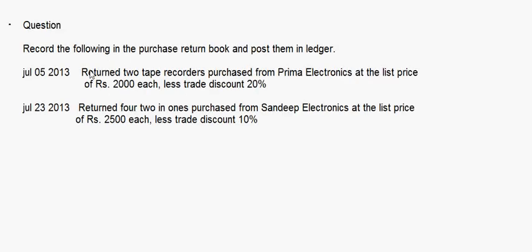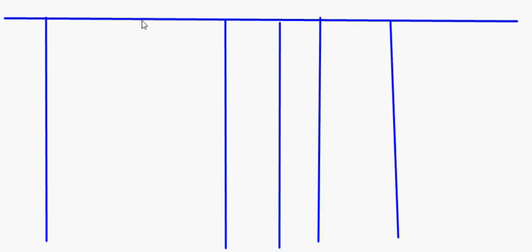Now look at this question — only two transactions. First: return two tape recorders purchased from Prima Electronics at the list price of 2000 each, less trade discount 20%. Second: return four 2-in-1s purchased from Sandeep Electronics at the list price of rupees 2500 each, less trade discount 10%. We will now make the purchase returns book with columns: date, particulars, debit note number, ledger folio, details, and amount.